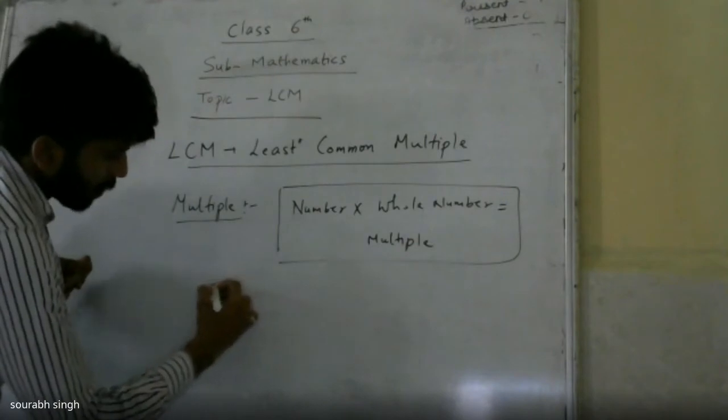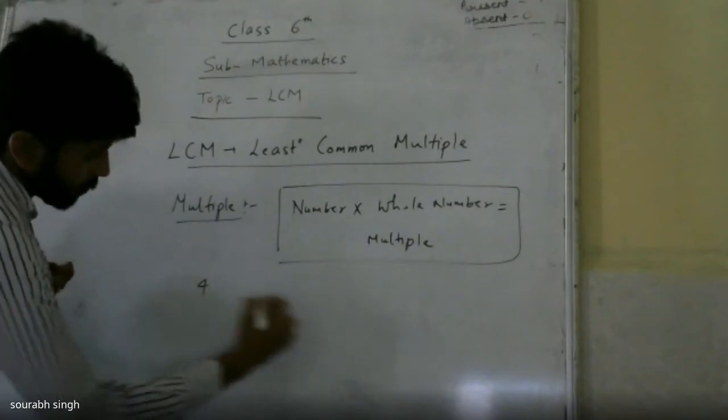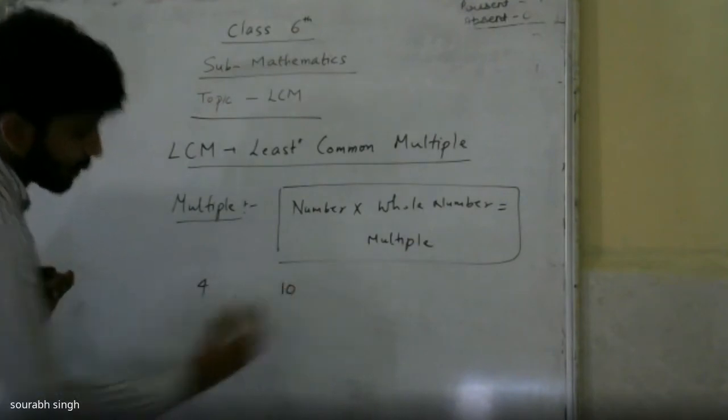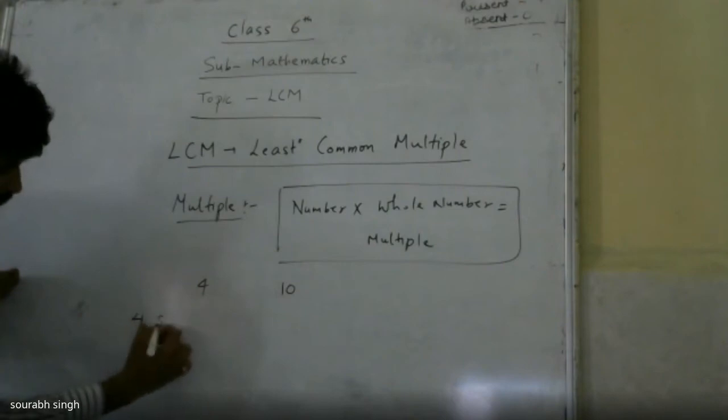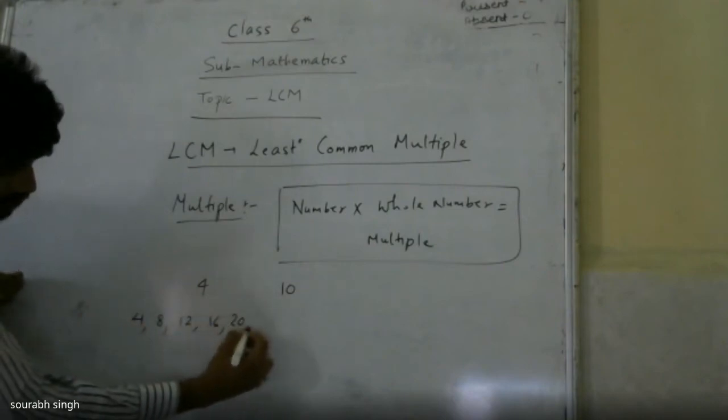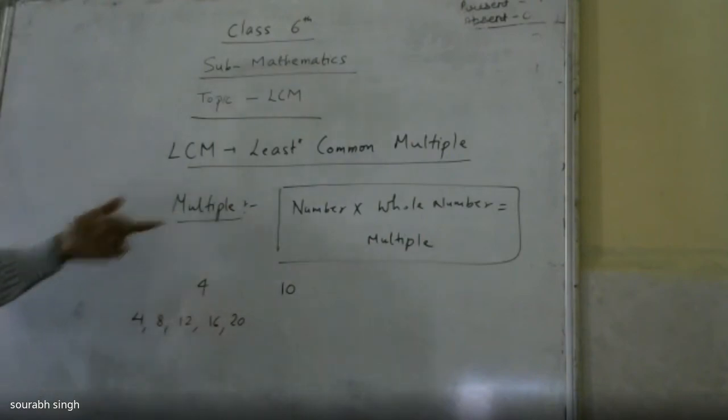For example, we have two numbers: 4 and 10. We all know what are the multiples of 4: 4, 8, 12, 16, 20, etc. Multiples are uncountable.